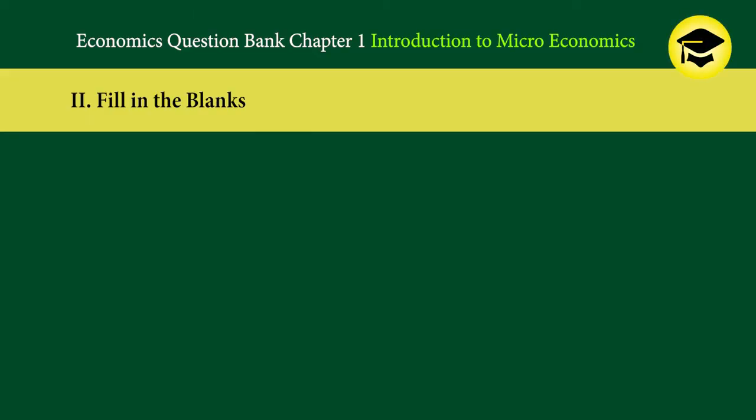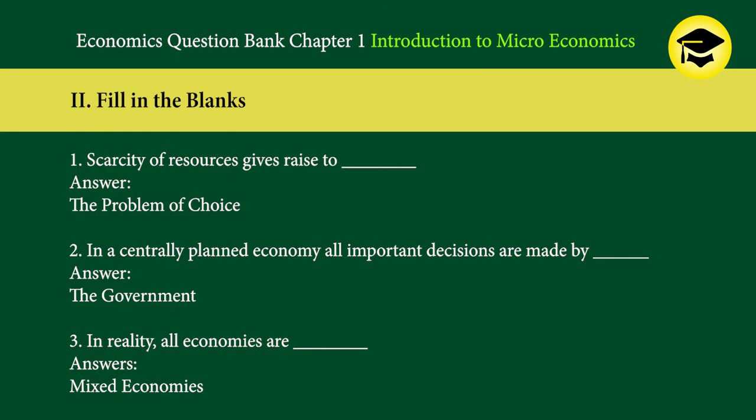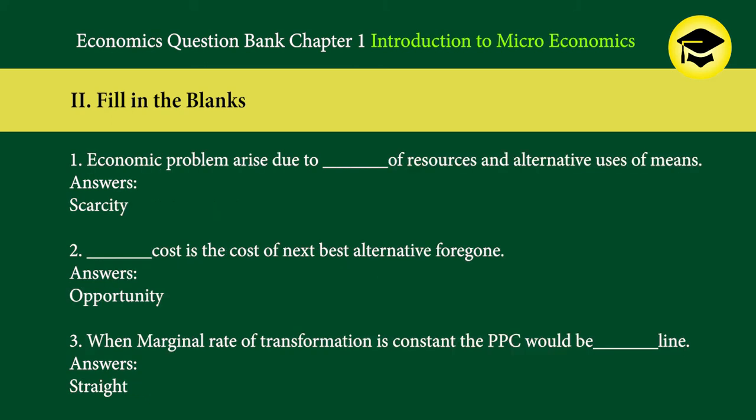Fill in the blanks. 1. Scarcity of resources gives rise to blank — answer: the problem of choice. 2. In a centrally planned economy, all important decisions are made by blank — answer: the government. 3. In reality, all economies are blank — answers: mixed economies.